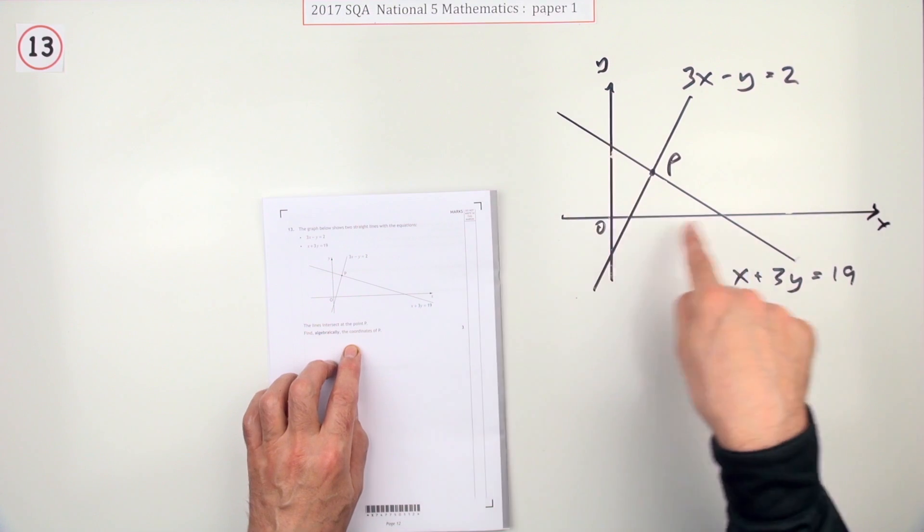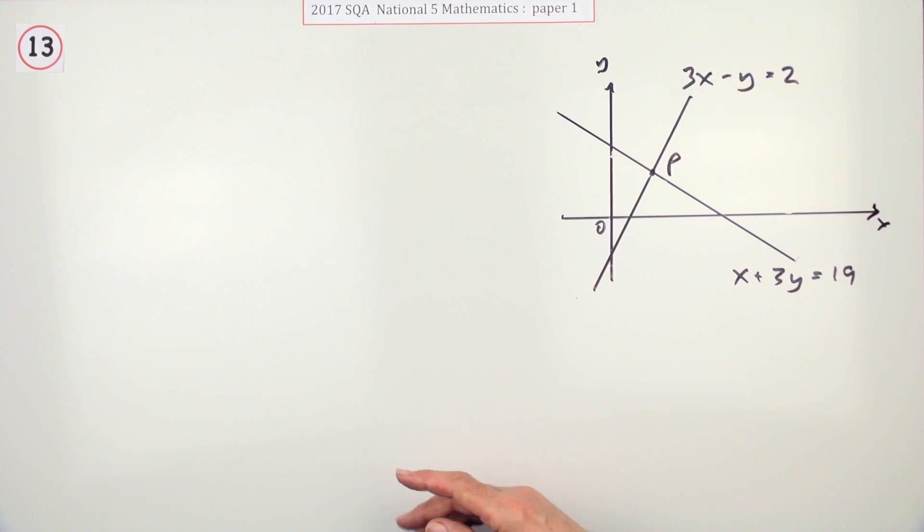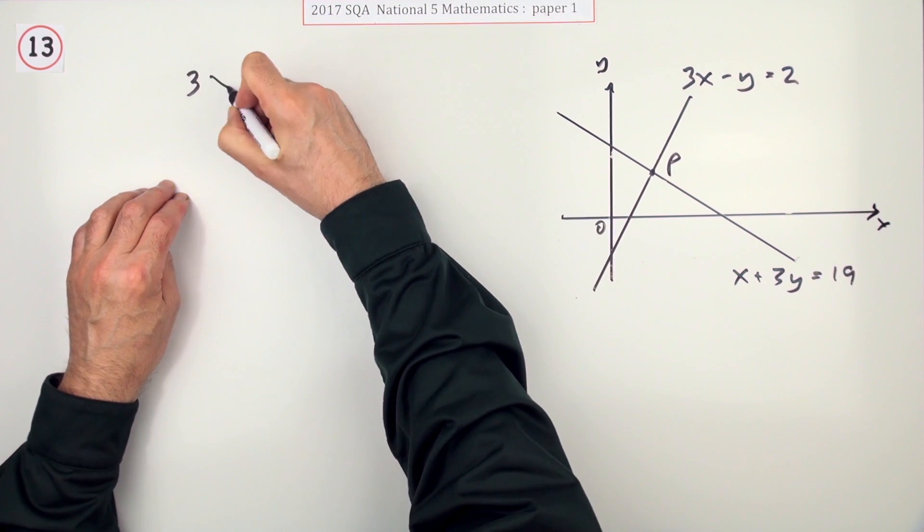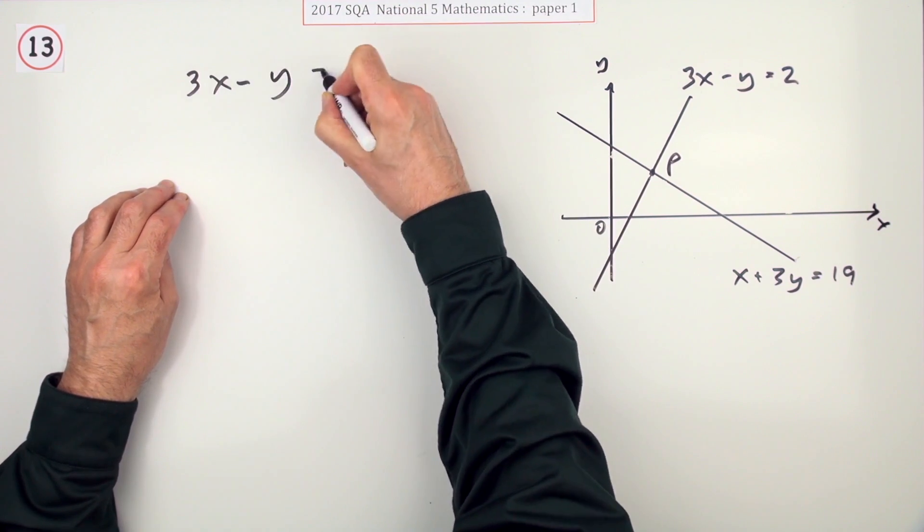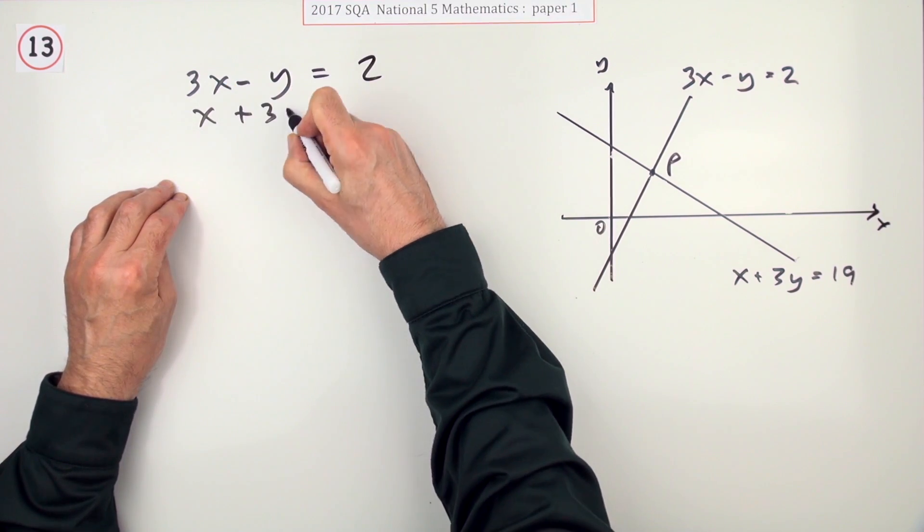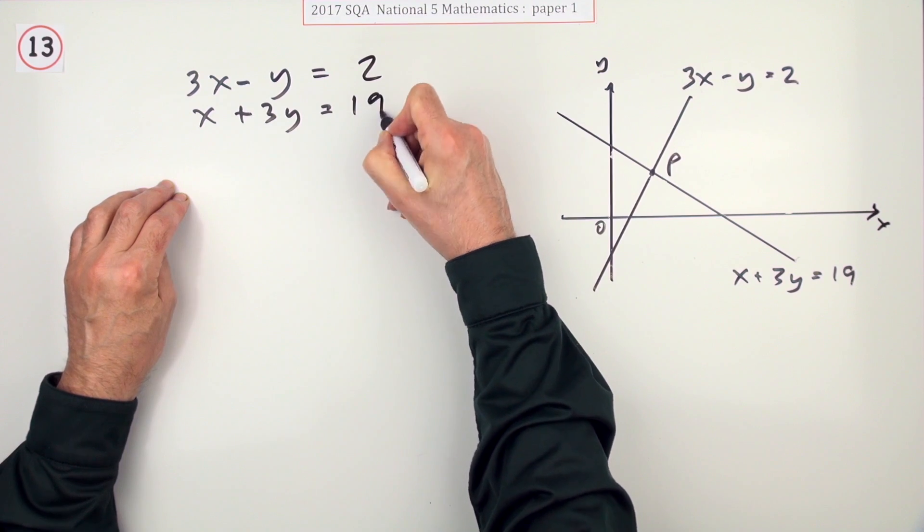Don't try and draw this diagram properly and measure along. It means I should use simultaneous equations. I'll just put my two equations down here: 3x minus y equals 2 and x plus 3y equals 19.